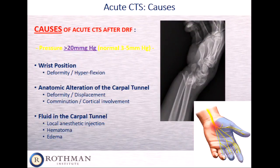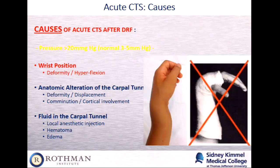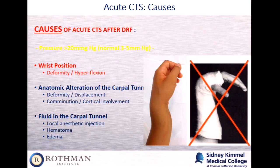What causes acute CTS in the setting of a distal radius fracture? Fundamentally, it's pressure. The normal pressure in the carpal tunnel is about 3 to 5 mmHg. When you have an acute CTS situation, the pressure is usually above 20 mmHg — that's the number that will start to precipitate symptoms. One cause is wrist position, either from the fracture itself or post-reduction. The Cotton-Loader position — where the wrist is placed in hyperflexion, ulnar deviation, with traction — puts a lot of pressure on the carpal tunnel.